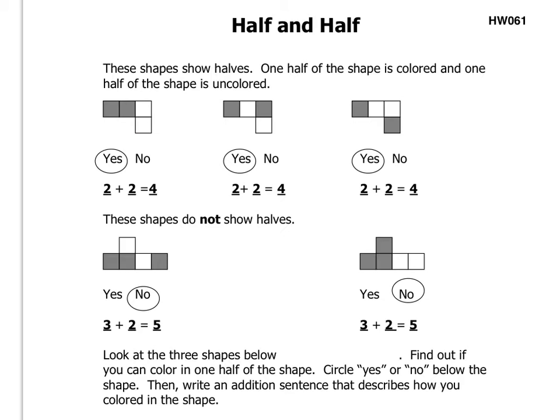Here we have four blocks. Two of them are shaded and two of them are not shaded. So yes, they can be split in half. Two shaded plus two unshaded equals four. Here we have four blocks and we have two shaded there and two unshaded there. Two shaded plus two unshaded equals four, so we circle yes.